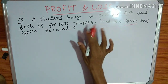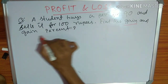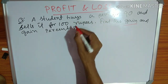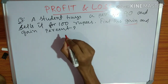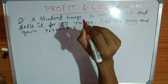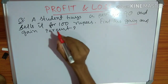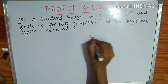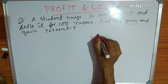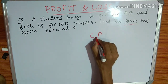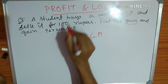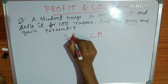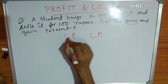Profit means gain. If you would like to calculate profit, then a loss would be the negative side. The cost price and selling price — SP — are key terms here.